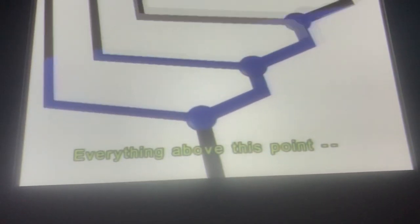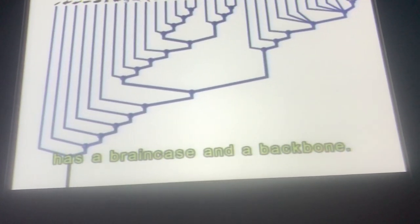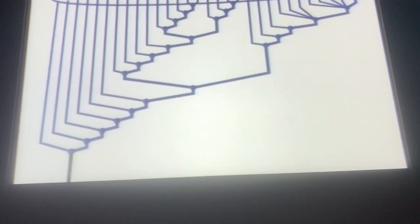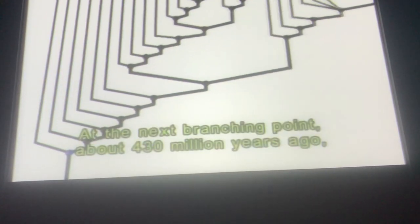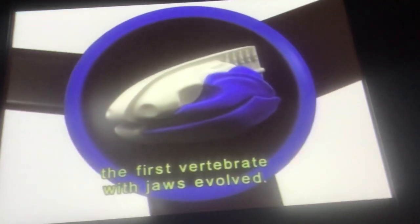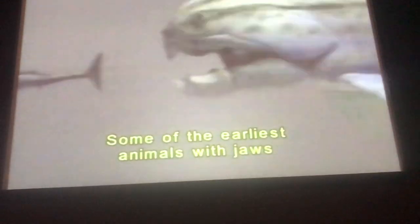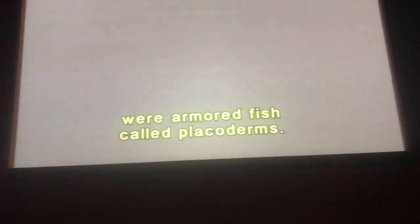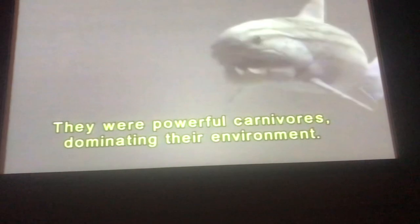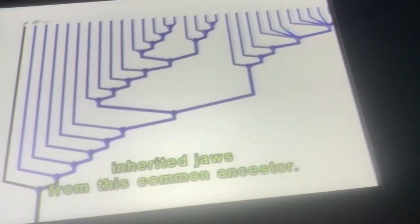Everything above this point — fish, amphibians, reptiles, birds, and mammals — has a brain case and a backbone. At the next branching point, about 430 million years ago, the first vertebrate with jaws evolved. Some of the earliest animals with jaws were armored fish called placoderms. They were powerful carnivores, dominating their environment. All animals that branched from this point inherited jaws from this common ancestor.